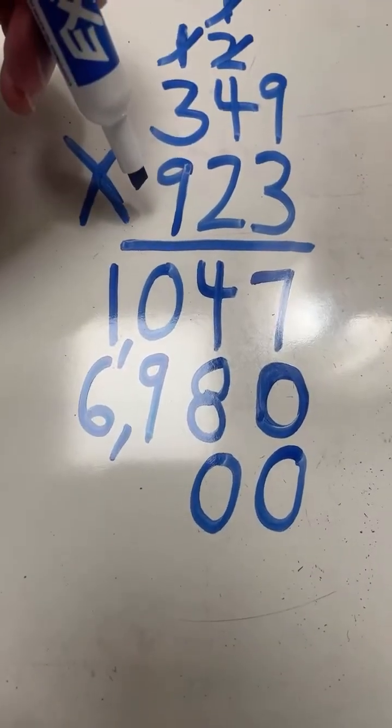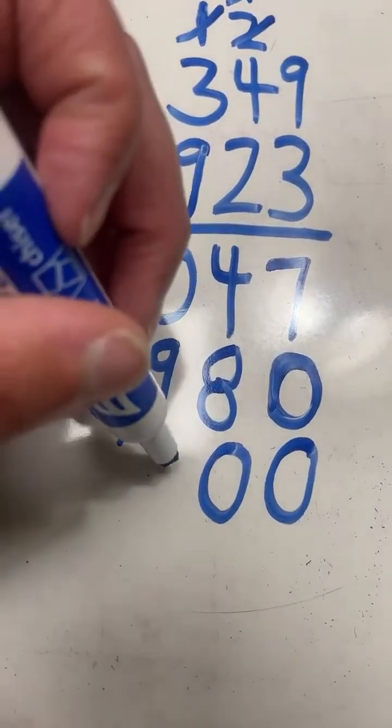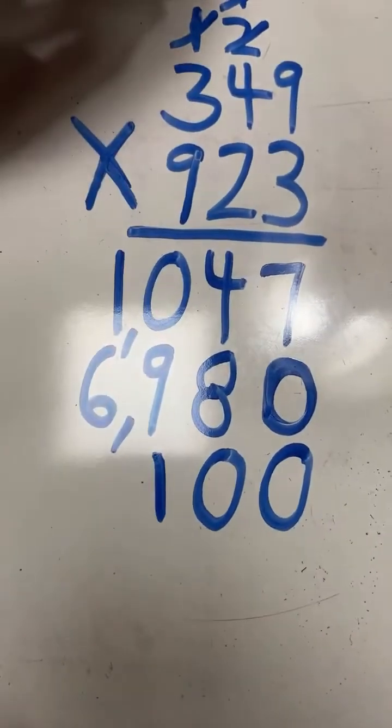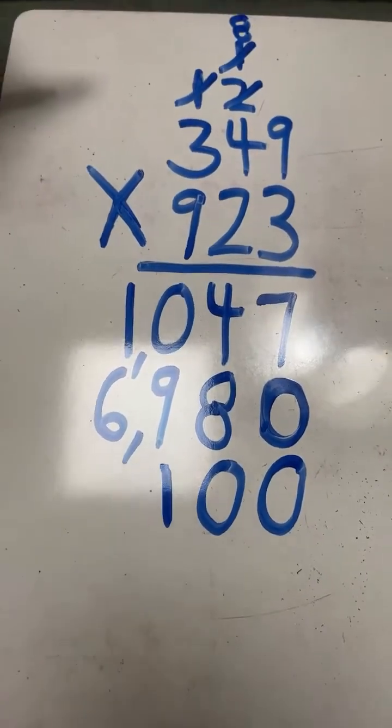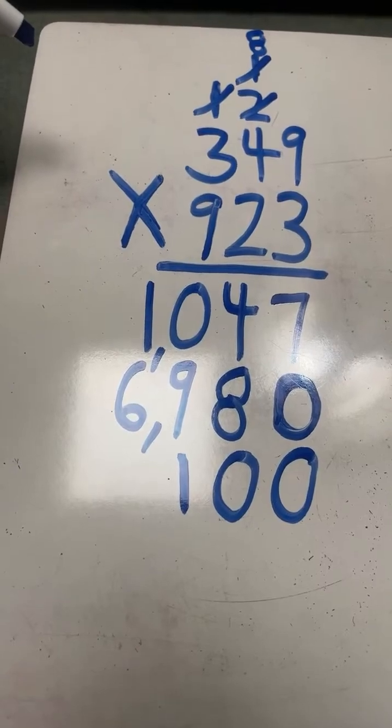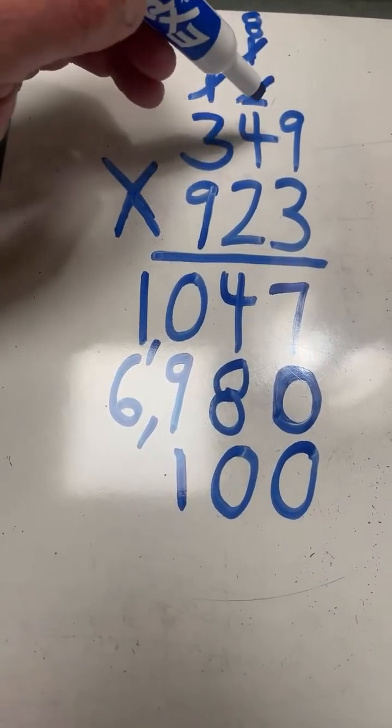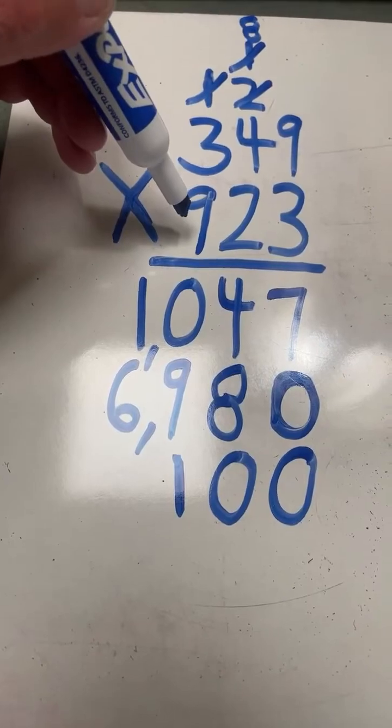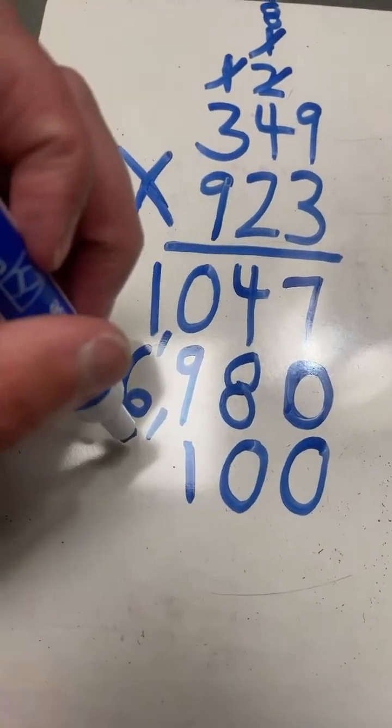9 times 9 equals 81. 1, carry the 8. 4 times 9 equals 36, plus 8 equals 44.